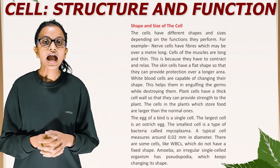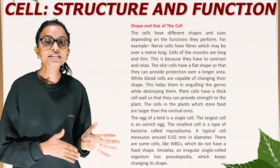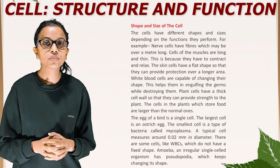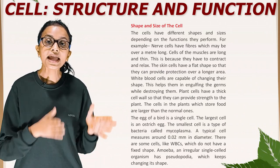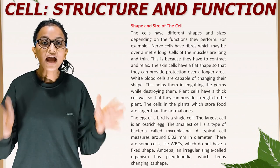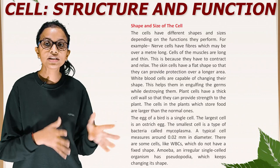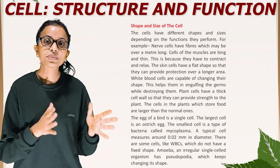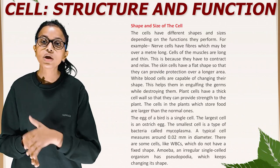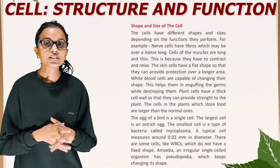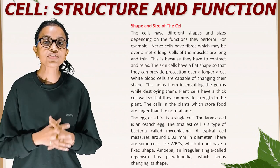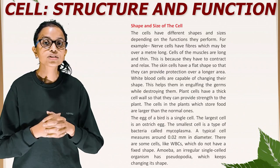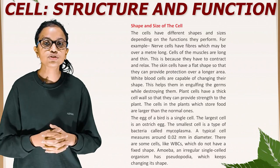Plant cells have a thick cell wall so that they can provide strength to the plant. The cells in plants which store food are larger than normal ones. The egg of a bird is a single cell. The largest cell is an ostrich egg. The smallest cell is a type of bacteria called mycoplasma. A typical cell measures around 0.02 mm in diameter. There are some cells like WBCs which do not have a fixed shape. Amoeba, an irregular single-celled organism, has pseudopodia which keeps changing its shape.